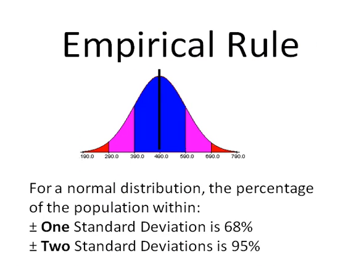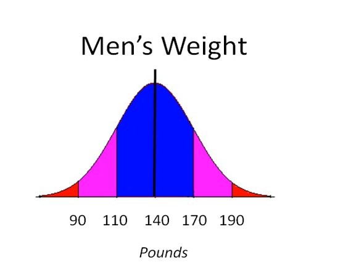Just to reiterate the empirical rule: 68% of the population is within one standard deviation, and 95% within two standard deviations. This works not only for verbal SAT scores, but anything that can be described by a normal distribution. For example, men's weight — let's say the average weight for men is 140 and the standard deviation is 30. The value one standard deviation above the mean is 170, and one standard deviation below the mean is 110. So between 110 and 170, 68% of the population exists, because the empirical rule tells us 68% of the population is always within one standard deviation of the mean.